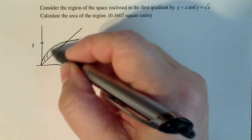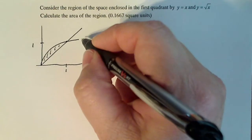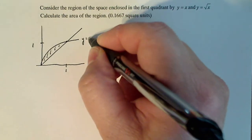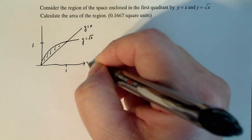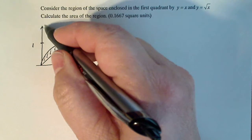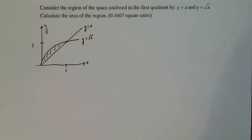So this is a region in the first quadrant that is bounded by those two graphs. So this is y equals square root of x, y equals x, x-axis, y-axis. Now we're going to find the area of this region that I've just shaded there.